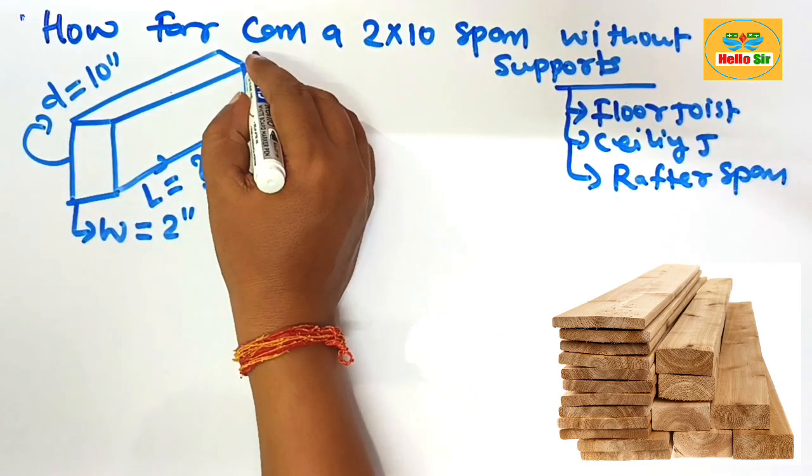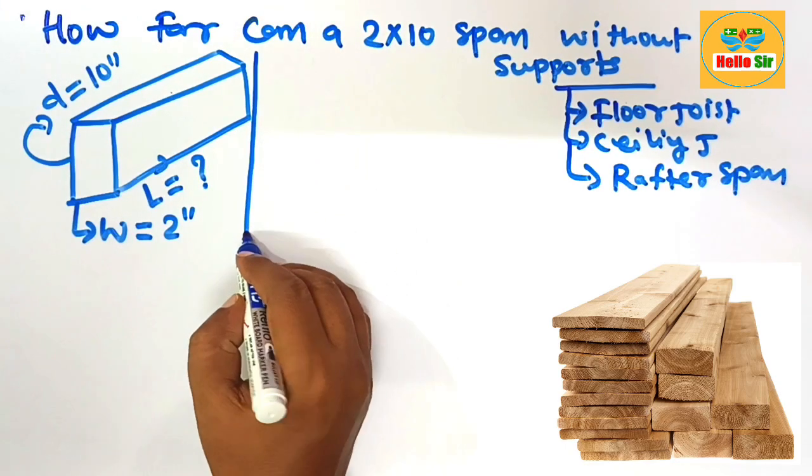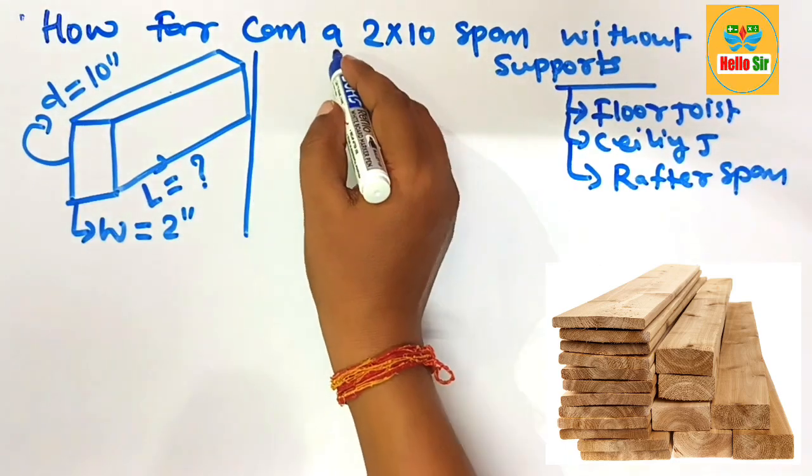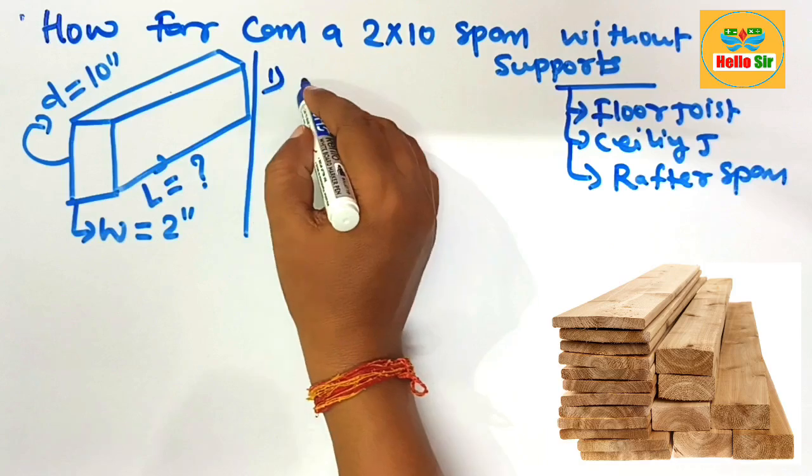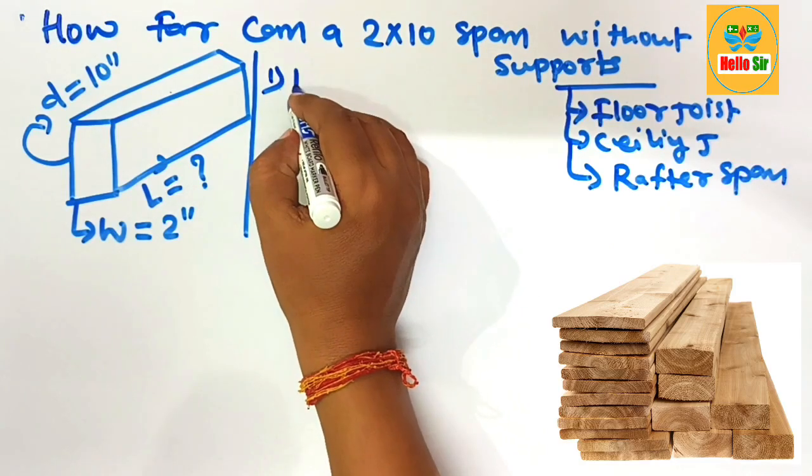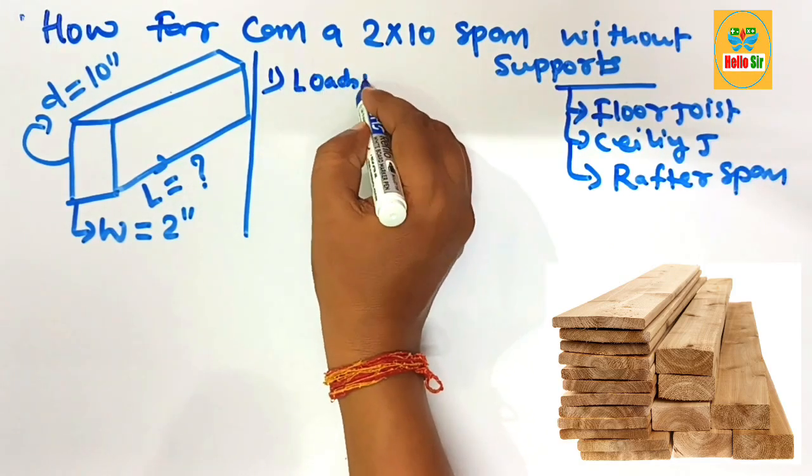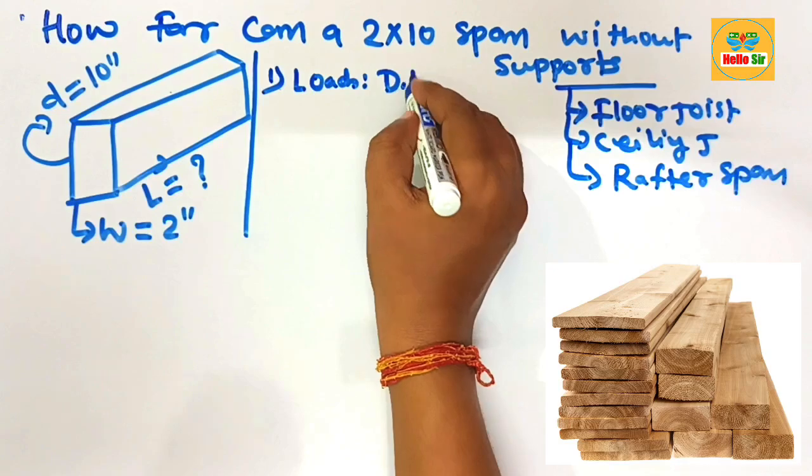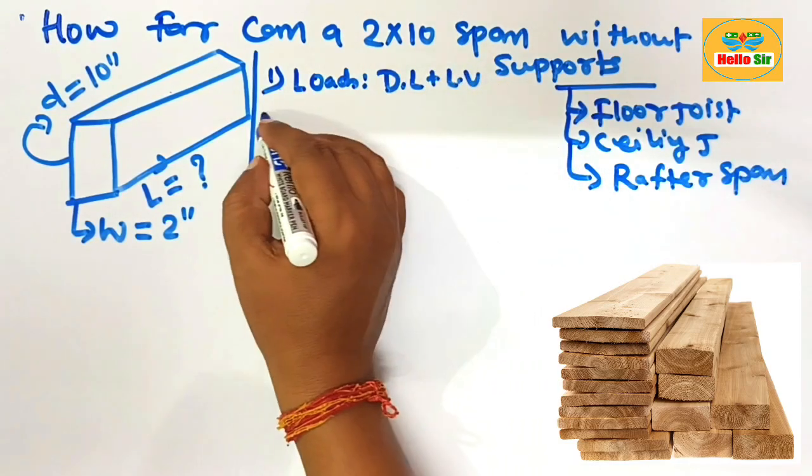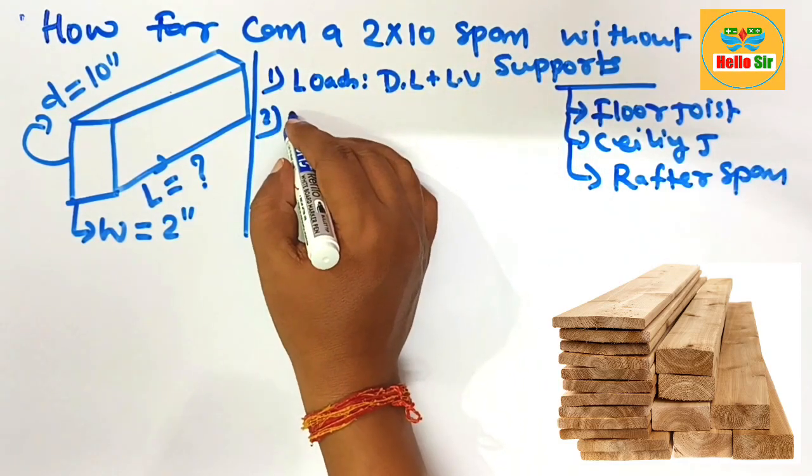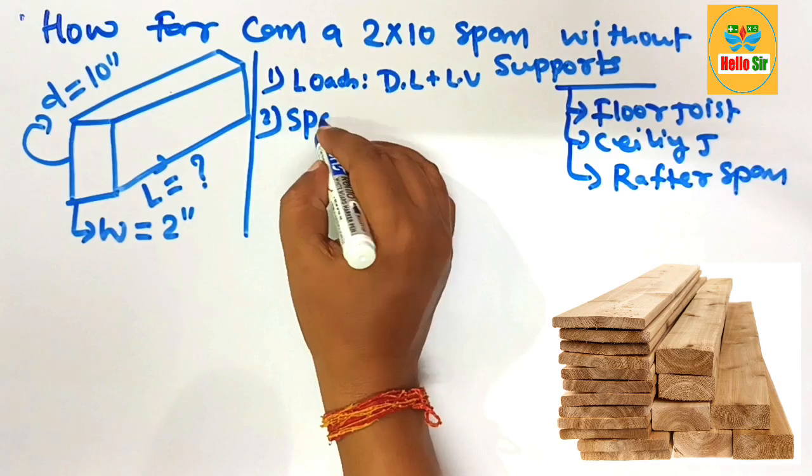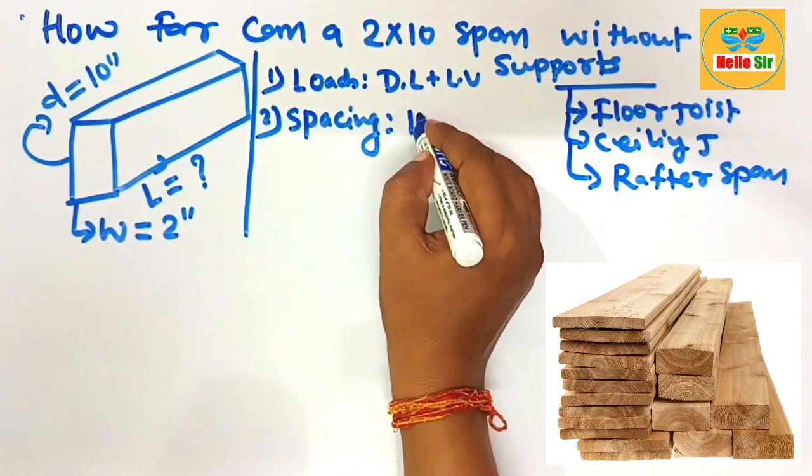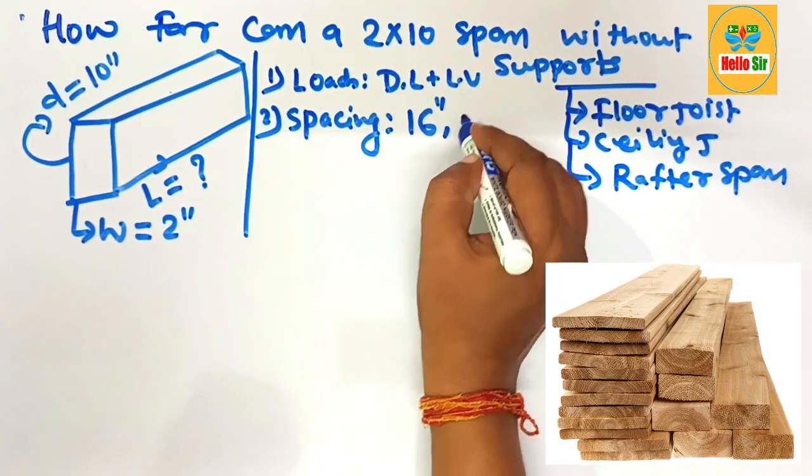Now, what are the major factors that decide the span length? The first major factor that decides the span length should be load - what will be the dead load and the live load. The second factor, that is spacing between the joists - what will be the spacing? Should it be 16 inches on center or 12 inches on center?